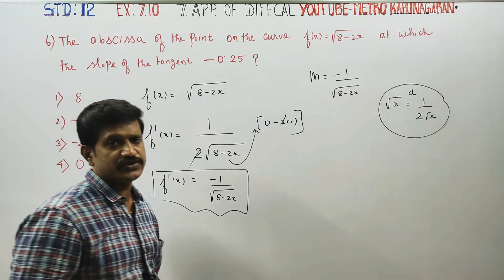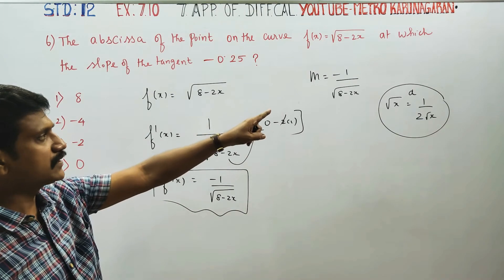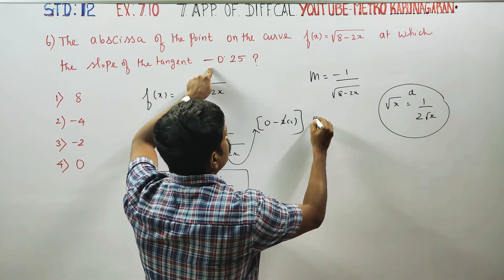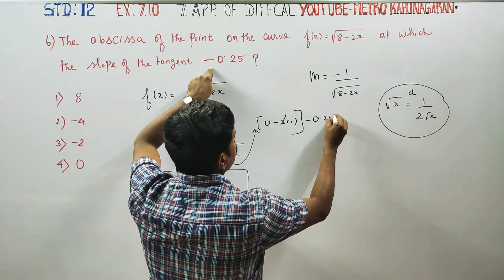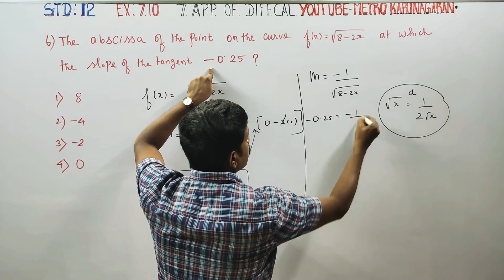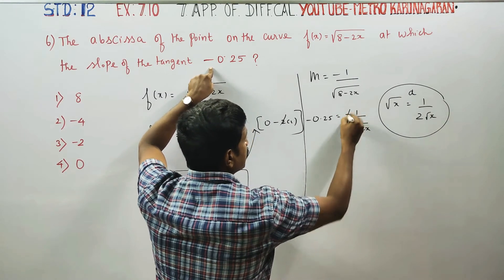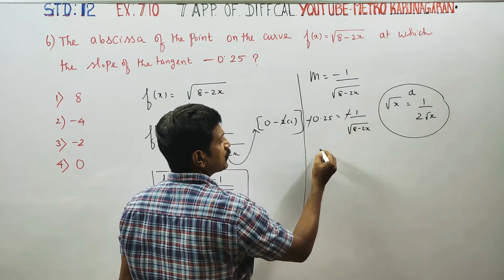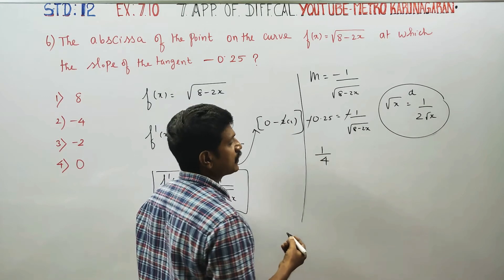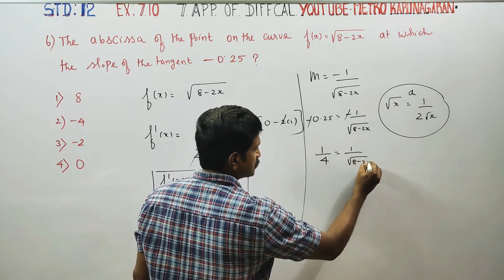The slope at the point x, y is equal to minus 0.25, which equals minus 1 by root of 8 minus 2x. The two negatives cancel, so 0.25 equals 1 by root of 8 minus 2x.